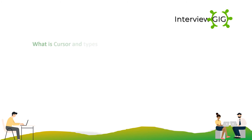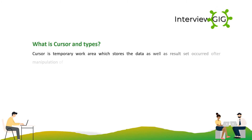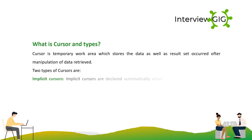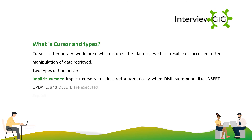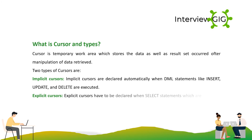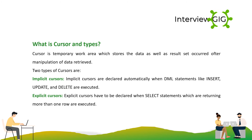A cursor is a temporary work area which stores the data as well as results that occurred after manipulation of data retrieved. There are two types of cursors: Implicit cursors, which are declared automatically when DML statements like insert, update, and delete are executed; and Explicit cursors, which have to be declared when select statements returning more than one row are executed.